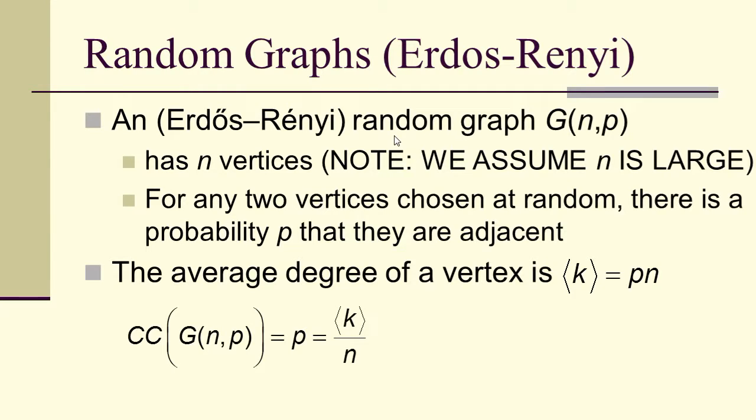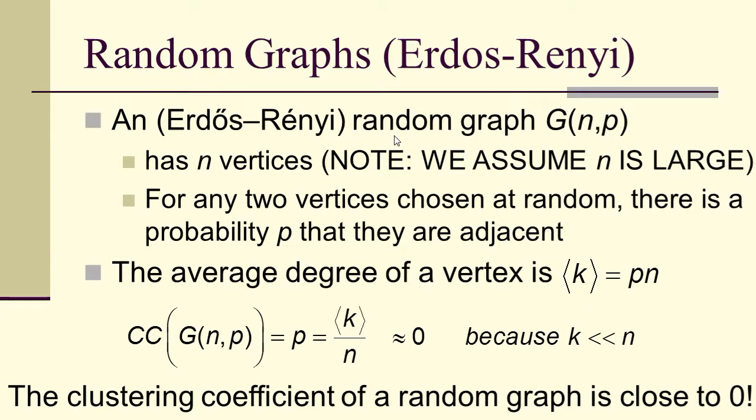If we look at the clustering coefficient, then the clustering coefficient of the graph is equal to p because that's the expected value over k over n. And that's close to 0 because k is much, much smaller than n. Therefore, the clustering coefficient of a random graph is practically 0. This will be important a little later.